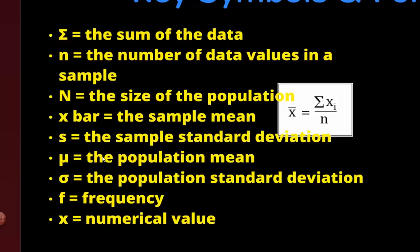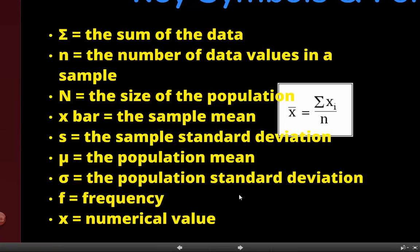So we have three s's to work with: lowercase s is the sample standard deviation, lowercase sigma is the population standard deviation, and uppercase Sigma means sum. F stands for frequency, and x stands for just one value in the data.